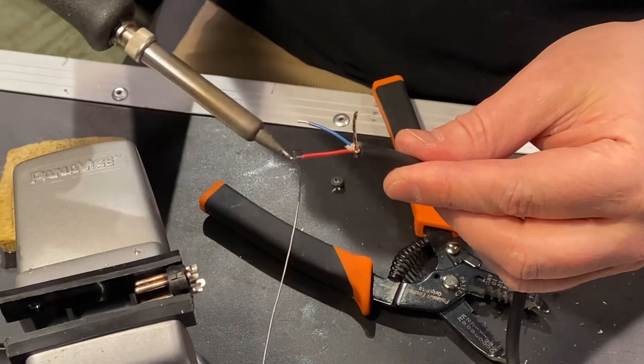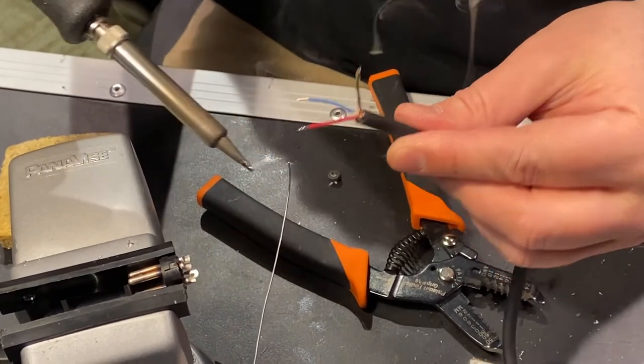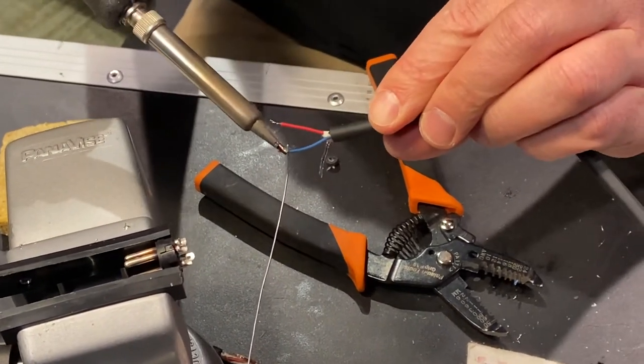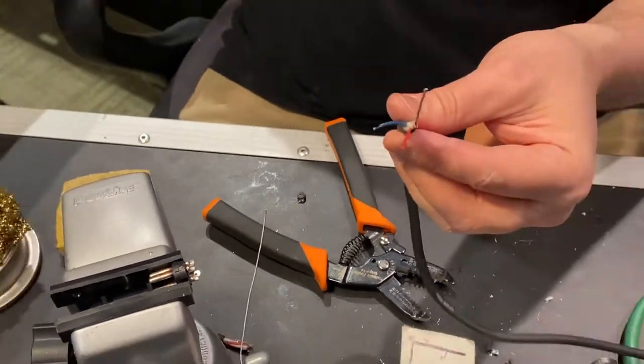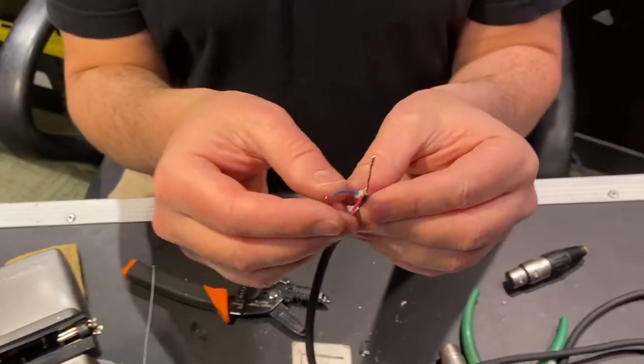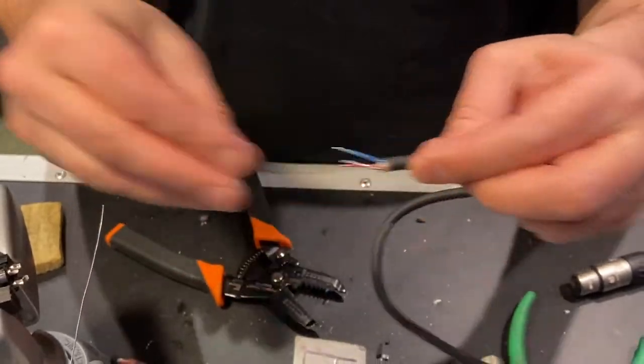Now these guys, tinning is very simple, very quick. Clean the iron, bring it in, melt the solder right on there. One big move, done. Same with the other one, one big move done. Now I've got perfectly ready to go wire.